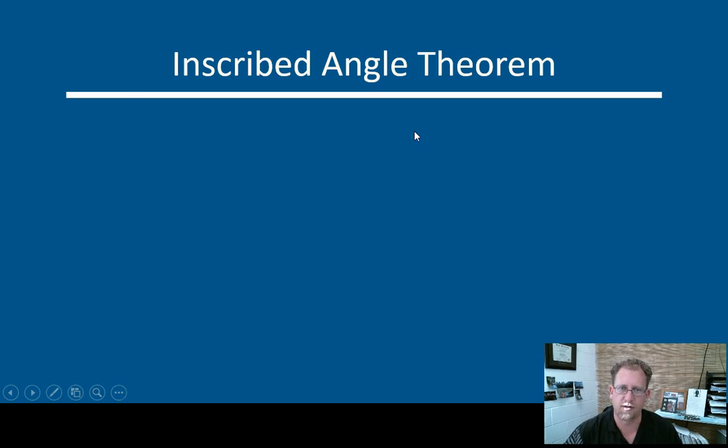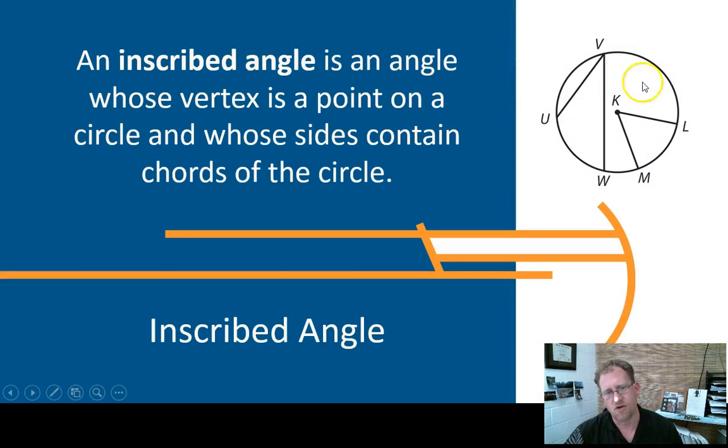So the measure of an inscribed angle is half the measure of the intercepted arc. Let's go back to the picture because they didn't put a picture on that slide. So if I were to tell you that the degree of arc here of UW were 60 degrees, that would mean that the angle here at point V is 30 degrees. The angle of the inscribed angle is one half the angle of the intercepted arc.